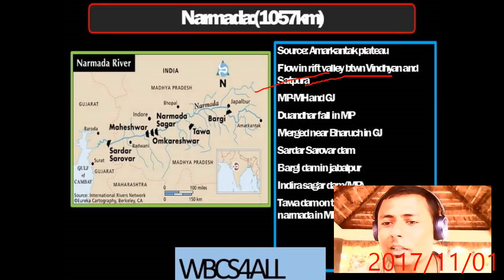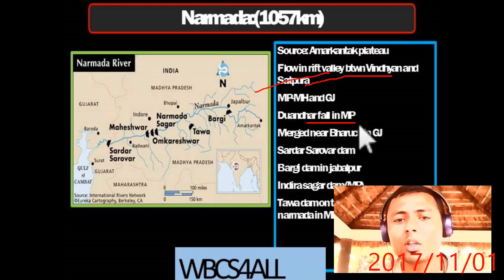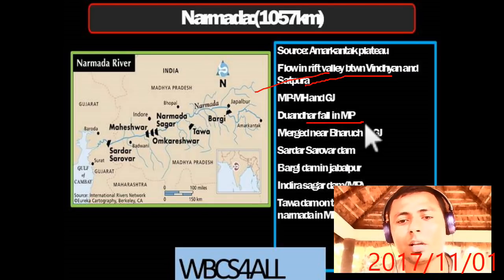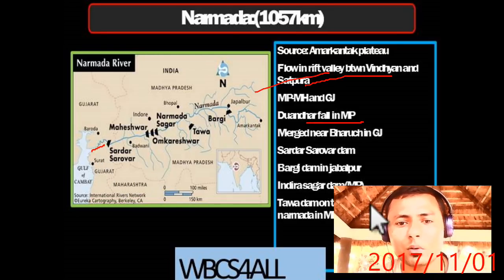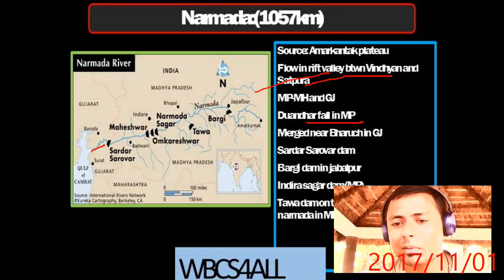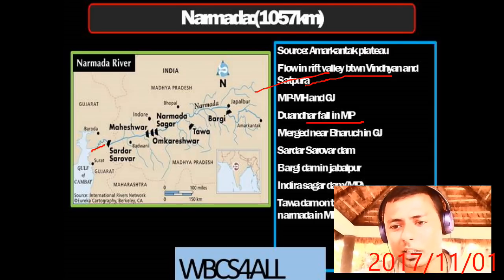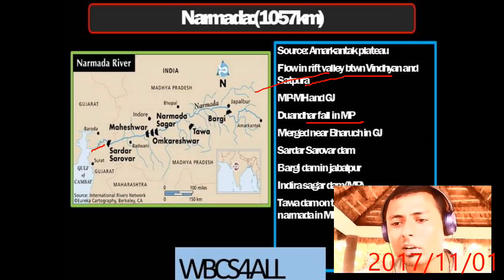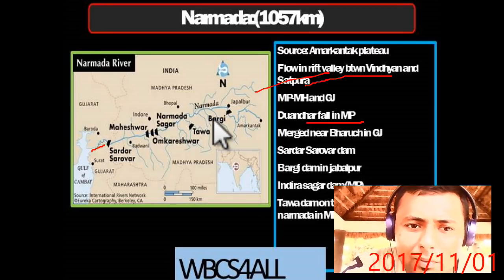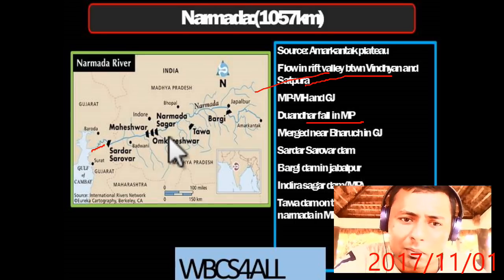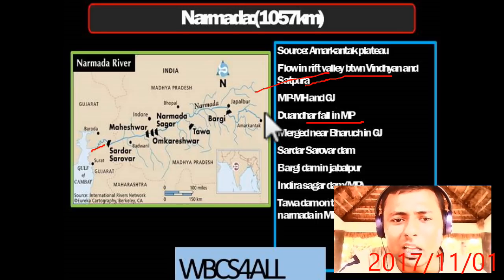Narmada flows through Madhya Pradesh, Maharashtra, and Gujarat. The Dhuandhar Waterfall is on the Narmada at Jabalpur in Madhya Pradesh. It meets the sea near Bharuch in Gujarat. Important dams on Narmada: Sardar Sarovar Dam in Gujarat, Bargi Dam in Jabalpur, Indira Sagar Dam in Madhya Pradesh, Tava Dam on the Tava River (a tributary of Narmada) in MP, Narmada Sagar Dam, and Omkareshwar Dam.